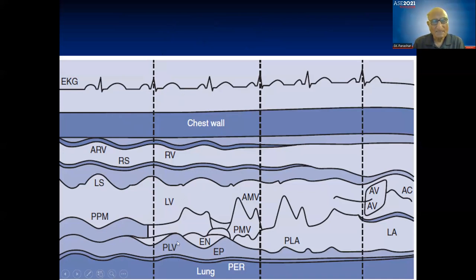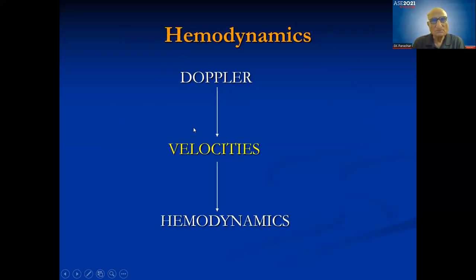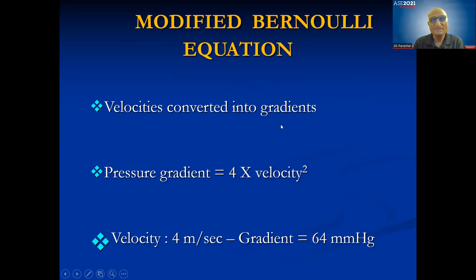Remember that from the QRS to the end of the T wave is systole, and after that is diastole. In systole there is thickening of the various segments of the LV or RV — this is normal systolic thickening. Clinical information is very important; never jump straight to the echo without good anatomic and hemodynamic information, because they are key to your diagnosis and severity assessment.